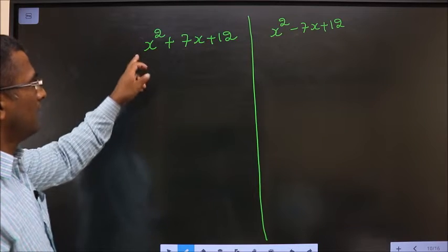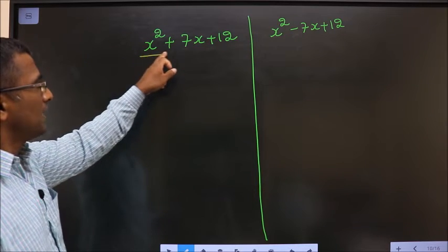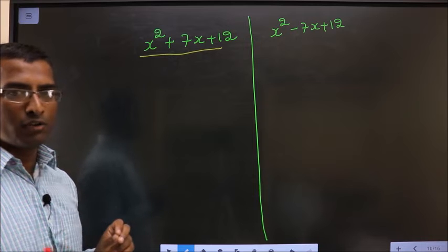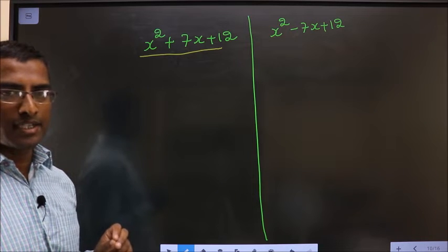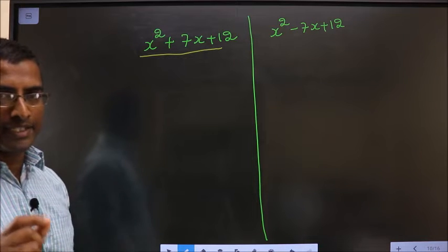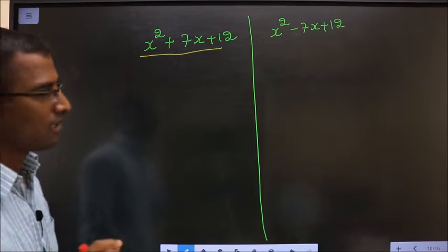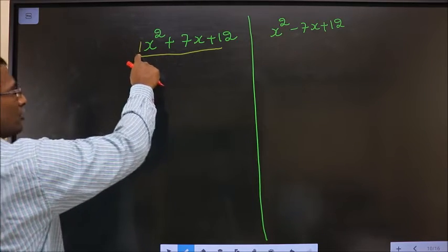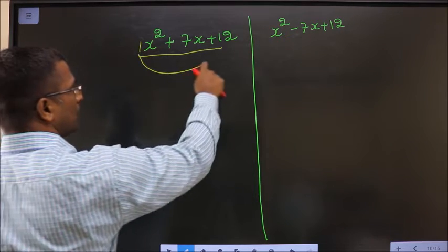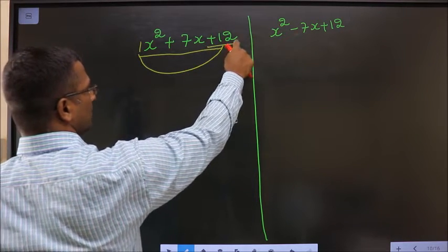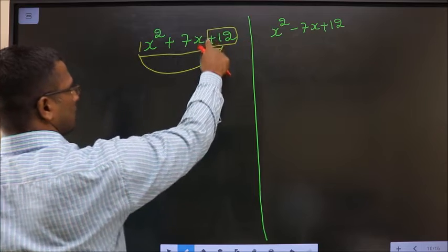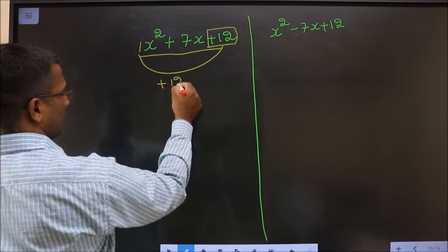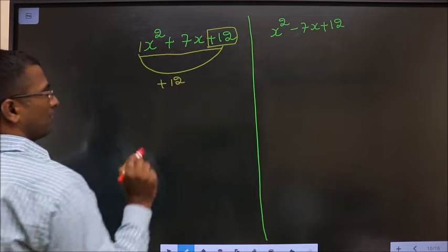Factorize x squared plus 7x plus 12. How do we factorize it? In Step 1, whatever you have here should be multiplied to the constant — that is plus 12 in this case. So plus 12 is Step 1.